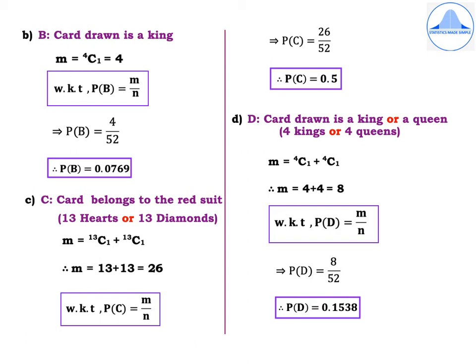Fourth subdivision: define event D as card drawn is a king or a queen. There are 4 kings and 4 queens, and we select one of each category. So m = 4C1 + 4C1 = 4 + 4 = 8. Therefore P(D) = 8/52 = 0.1538.